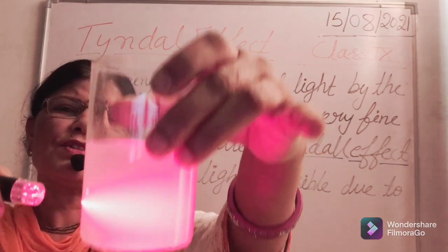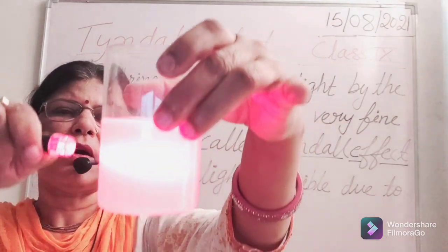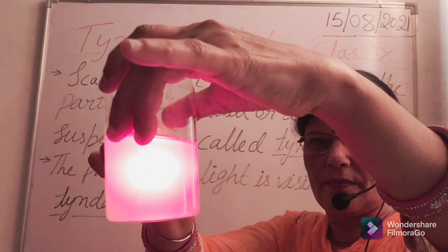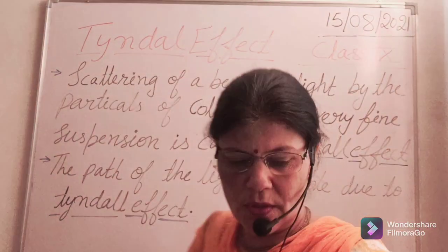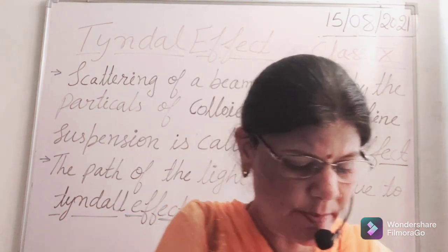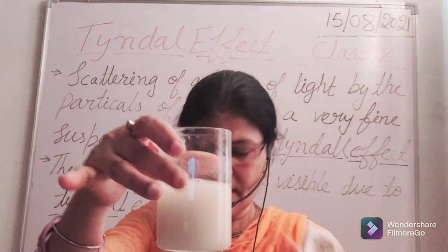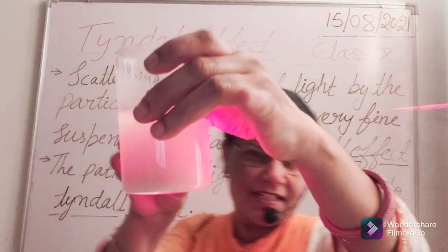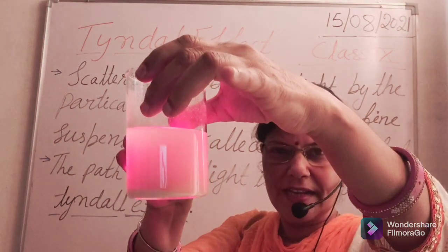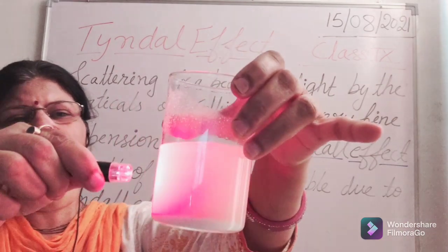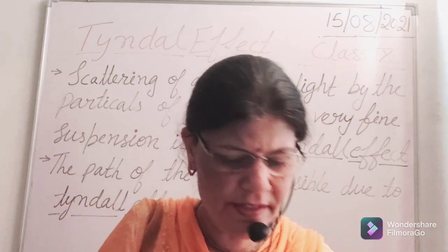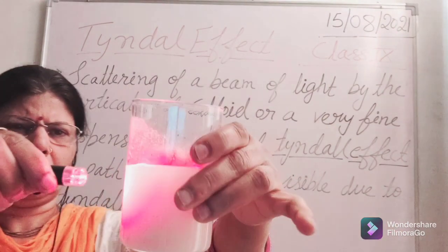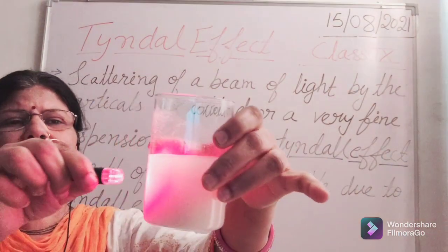You can see how the scattering happens, how the light is scattered through this colloidal solution. Now let us see what happens with the suspension. This is our suspension — let us see whether it scatters the light. Oh wow, it is also scattering a beam of light! We can easily observe the scattered light through this suspension. Let us stir it again, because all the particles are getting settled at the bottom. It is again showing scattered light through this solution.